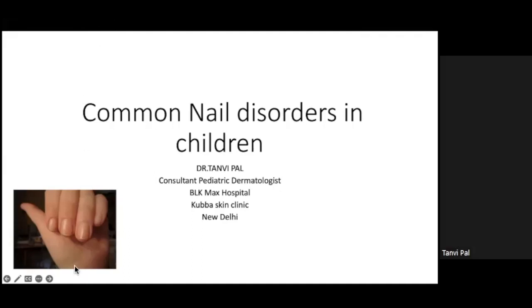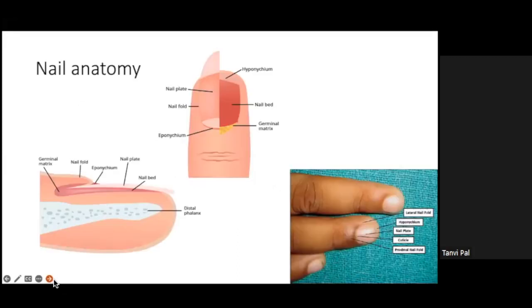We'll be talking about common nail disorders in children. Starting with nail anatomy, we'll cover the germinal matrix — the germinative epithelium from which the nail plate arises — the proximal nail fold at the proximal end of the nail bed, the distal and lateral nail folds, and the hyponychium, which is the space between the nail bed and the distal phalanx.